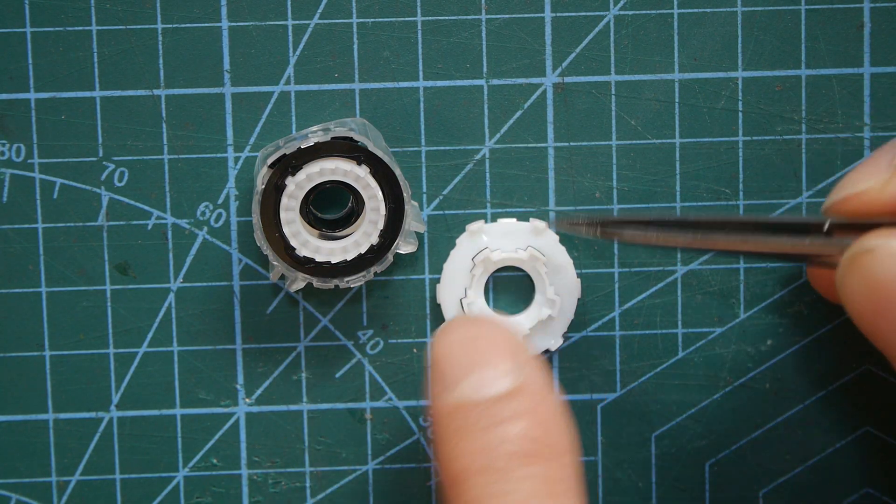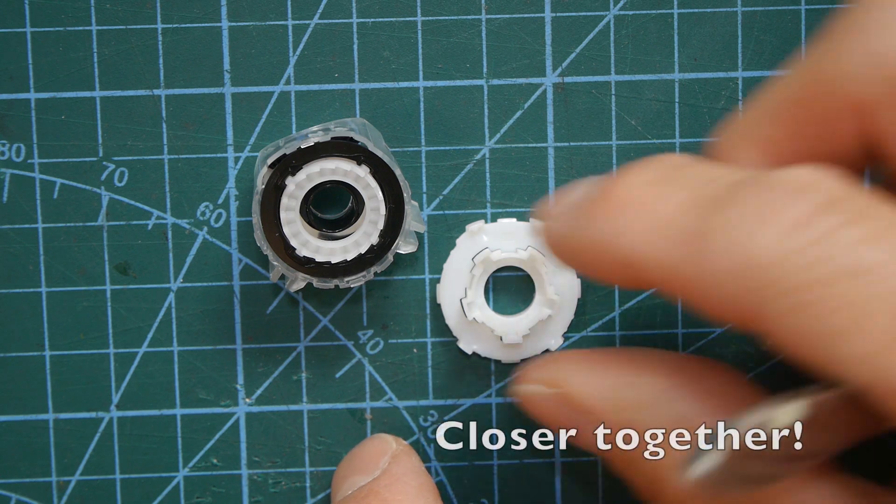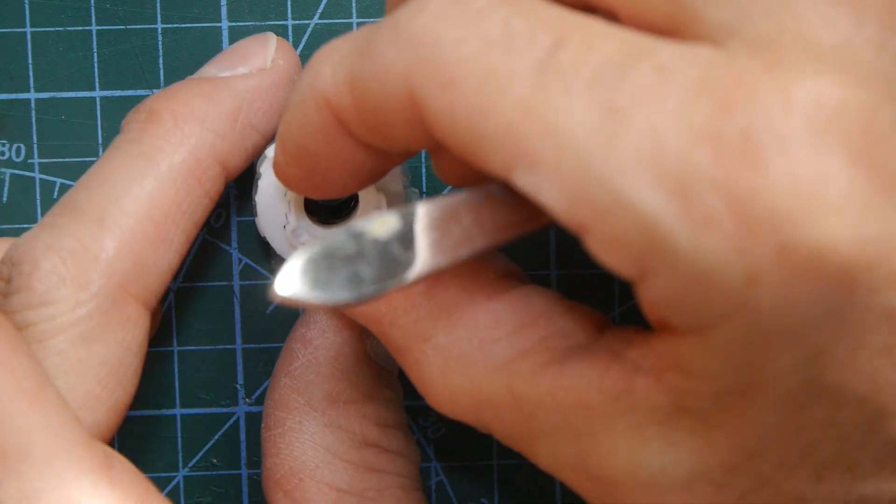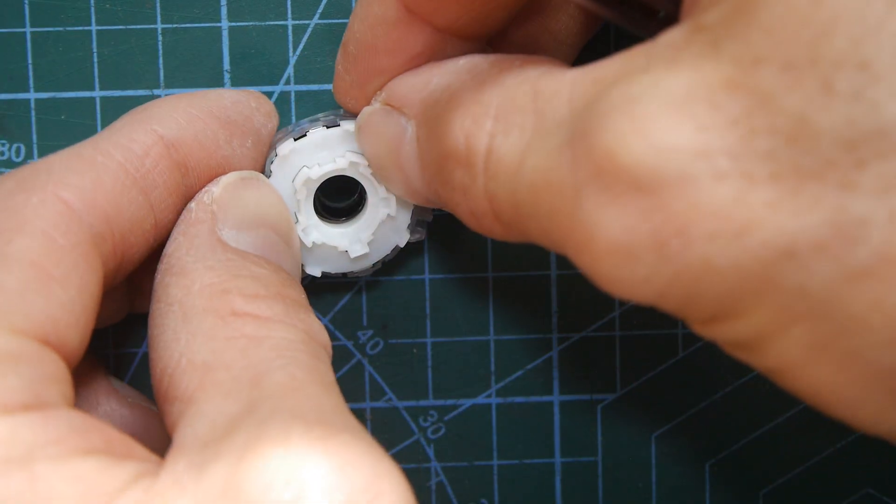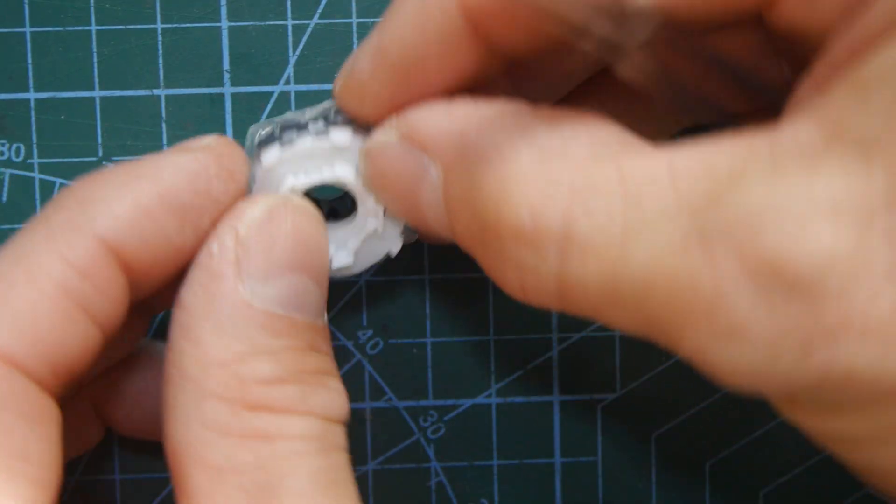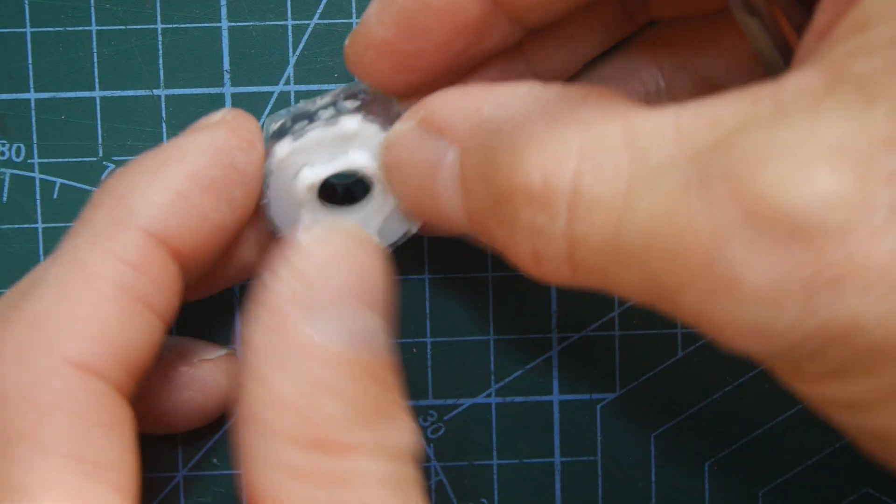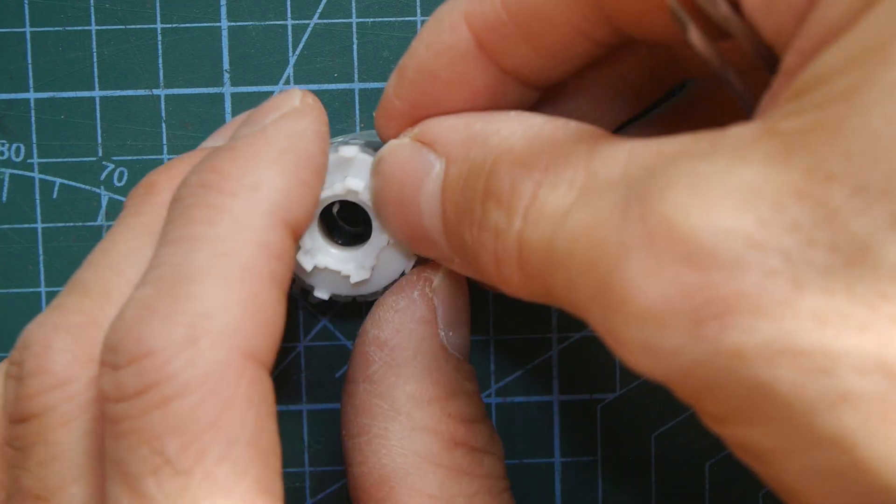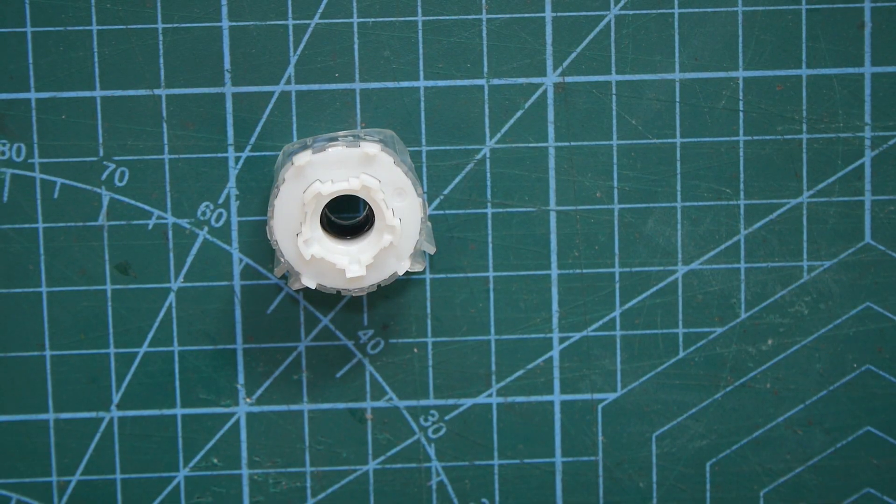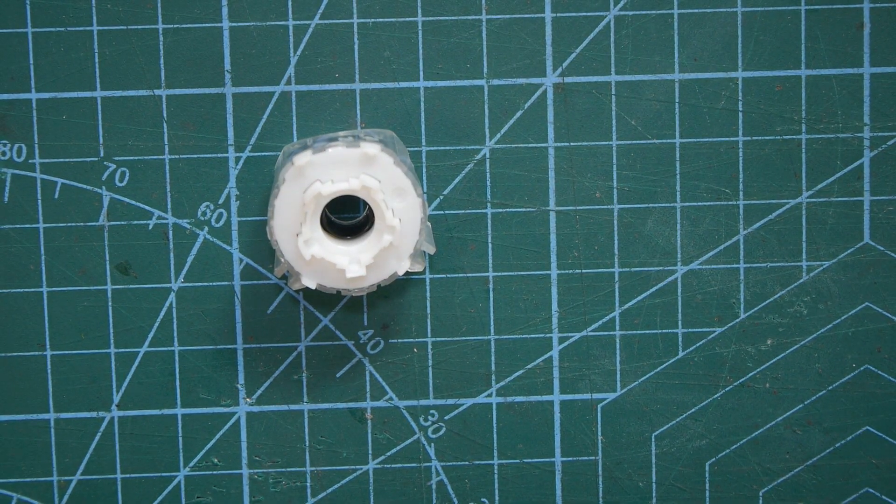So let's see if I can put it all now back together. Interestingly enough this has to go in exactly the right way because these two tabs here are further apart than those. This must all be put together by a machine in the factory it's really clever.